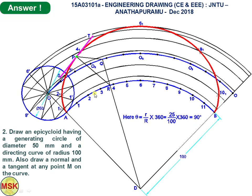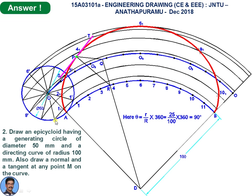The arc length AB naturally equals the circumference of the rolling circle. After drawing the directing curve sector, with respect to point A draw a circle and divide it into 12 parts. Since the circle is divided into 12 parts, divide arc AB also into 12 parts.